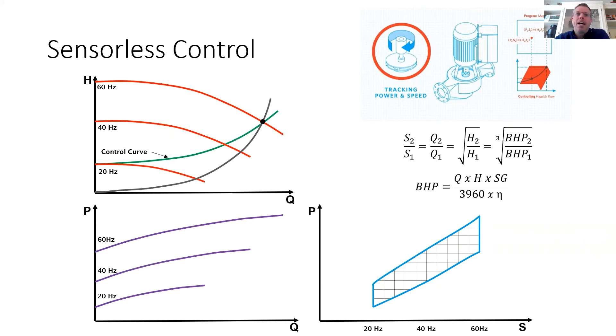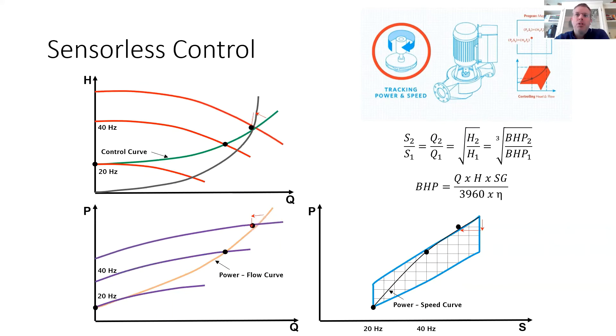So that control curve also generates a corresponding power and speed curve. And so as valves start to close out of the system, your flow is going to drop and your head is going to increase, but it's going to be in a square root relationship. So the resulting power consumption at that given speed is actually going to drop. So that's going to take you off the power-speed control curve, and in order to get back onto the control curve, the pump controller will slow down the speed of the pump until the appropriate power consumption is reached via their map.